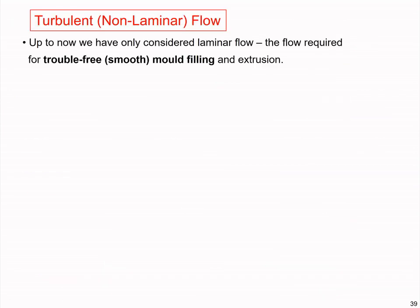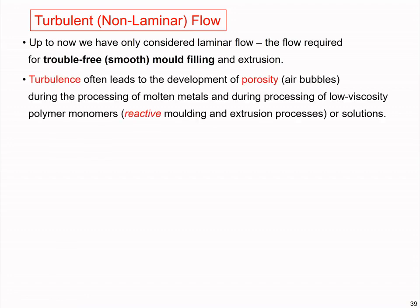Let's look at some brief information about turbulent flow behavior — we discussed this at the beginning of the lecture and I'll highlight a few points quickly. We have considered laminar flow behavior and used the Reynolds number to quantify laminar, transitional, and turbulent flow. For trouble-free smooth mold filling, mostly in extrusion, we need laminar flow. Turbulent flow can cause good mixing of the fluid but can also introduce problems with air bubbles creating porosity.